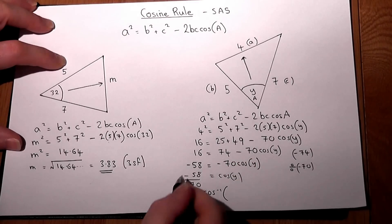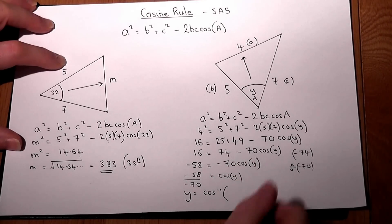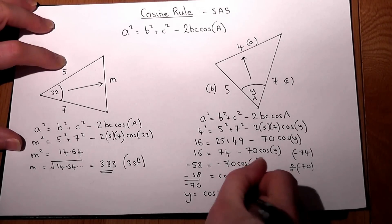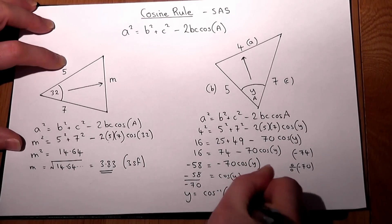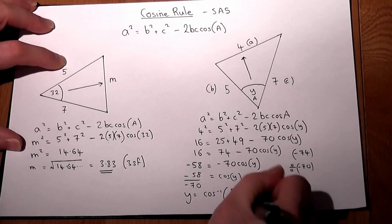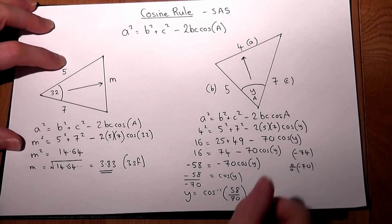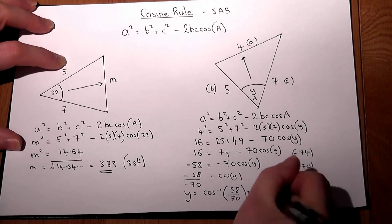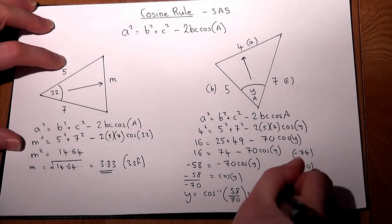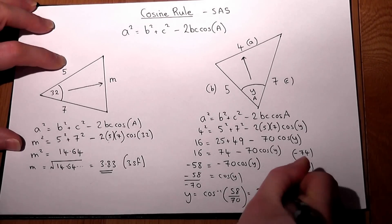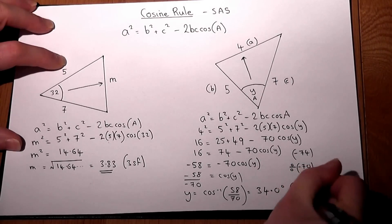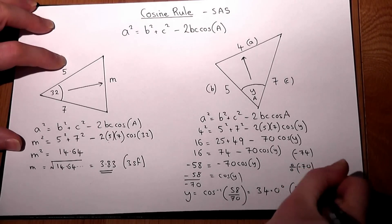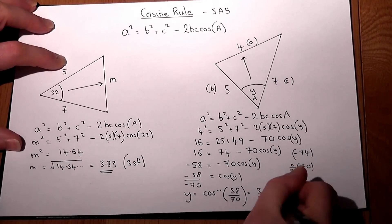The two minus signs cancel out, so we have 58 over 70. Y equals the inverse cosine of 58 over 70. Press enter and we get 34.0 degrees to three significant figures.